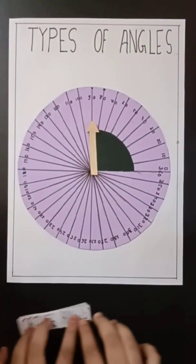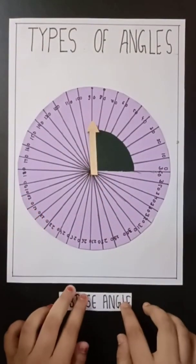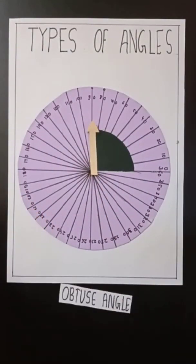Obtuse angle — greater than 90 degrees but less than 180 degrees.